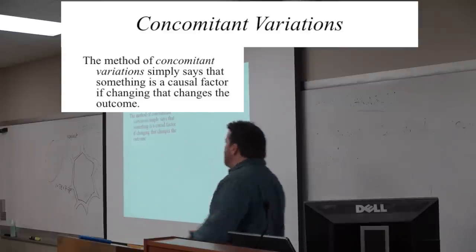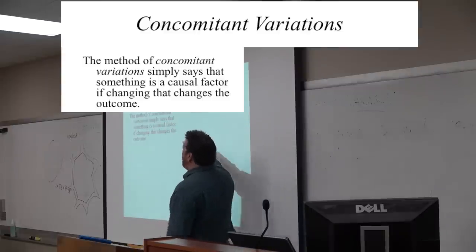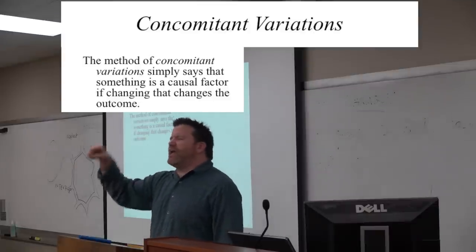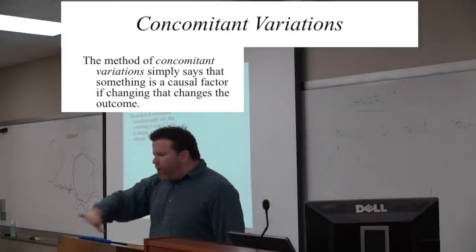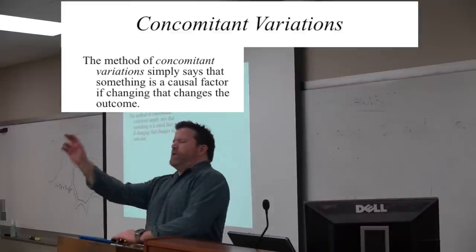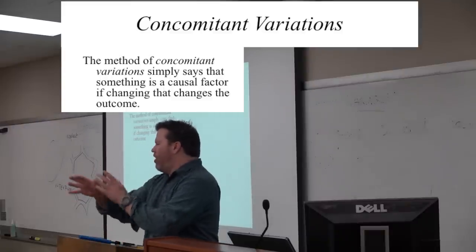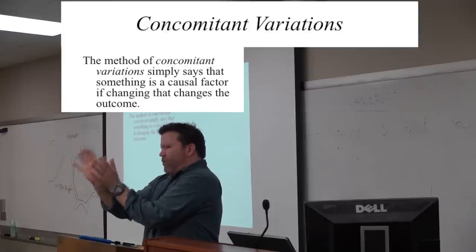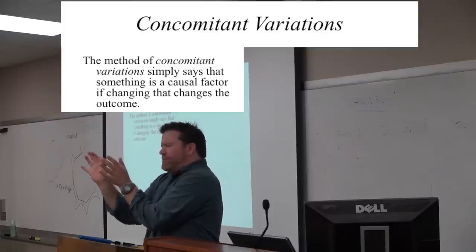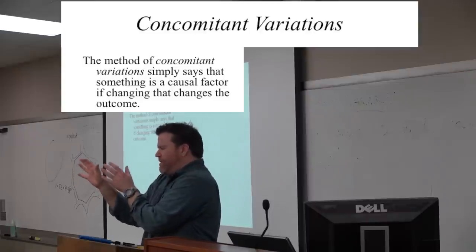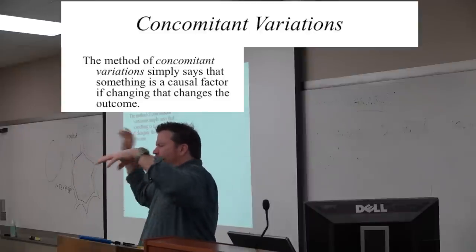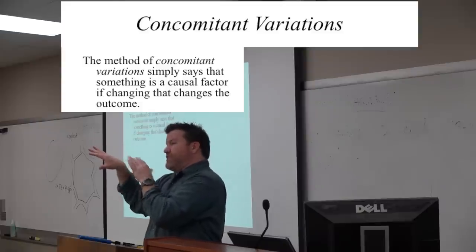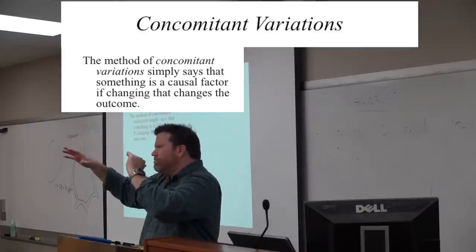The third one, concomitant variation. This simply says that if something is a causal factor, or we might think to ourselves a putative causal factor, if changing it changes the outcome. You have all used concomitant variations. If you've ever had a certain kind of car that made a noise when you drove it. Like I drove a car all through graduate school that made noises. When you'd go to stop, it sounded like it was having sex with you. When it would go a little too fast, you know, doors flew off. I don't know. It was not a very good car is all I'm trying to say.